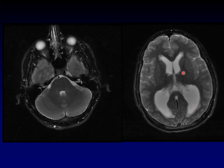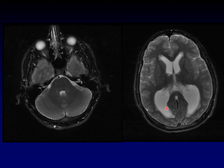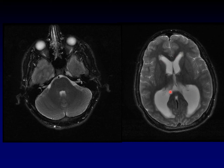These ventricles are too big — this is hydrocephalus. But on another cut going through the posterior fossa, his fourth ventricle is perfectly fine. How can the lateral ventricles be enlarged while the fourth ventricle is normal? The obstruction to CSF flow must be between the lateral ventricles and the fourth ventricle. CSF is produced in the choroid plexus of the lateral ventricles, flows into the third ventricle, and from there into the fourth. An obstruction in between produces obstructive hydrocephalus with enlarged lateral ventricles.